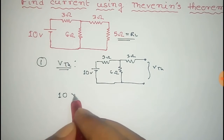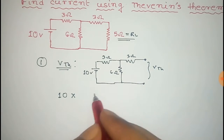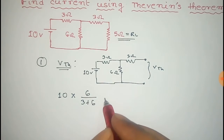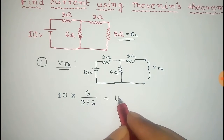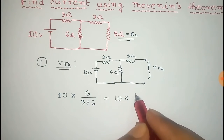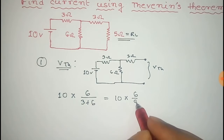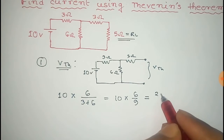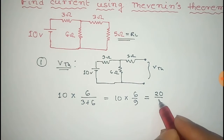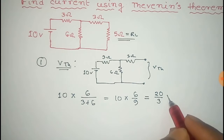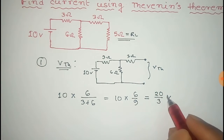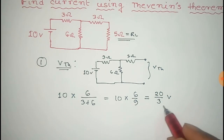We will get the Thevenin voltage by finding the voltage across this 6 ohm resistor. By the voltage divider rule, it will be 10 multiplied by 6 divided by the sum of the resistors, that is 3 plus 6. So that equals 10 into 6 by 9, which equals 20 by 3 volts. This is the Thevenin voltage, that is 20/3 volts.